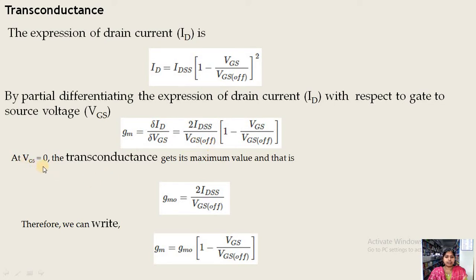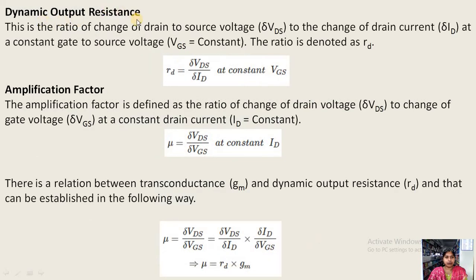The maximum value of GM occurs when VGS = 0, denoted GM0. Substituting VGS = 0: GM0 = 2·IDSS/VGSoff. Substituting this back into the GM expression gives GM = GM0 × (1 − VGS/VGSoff).